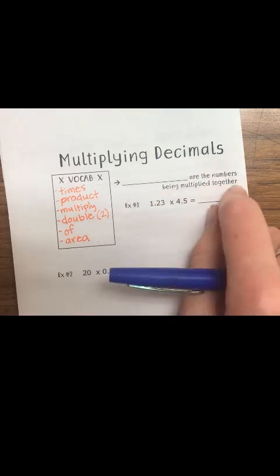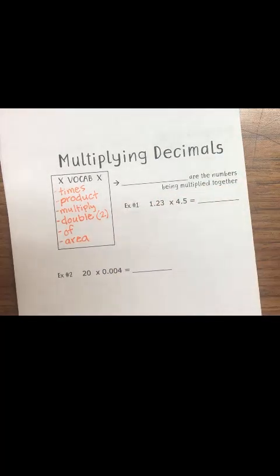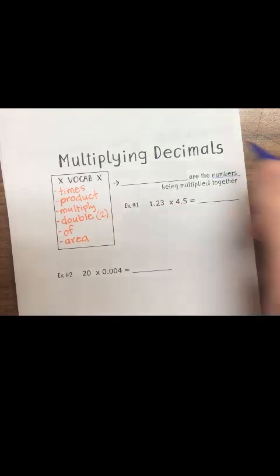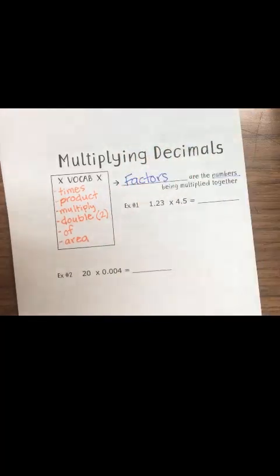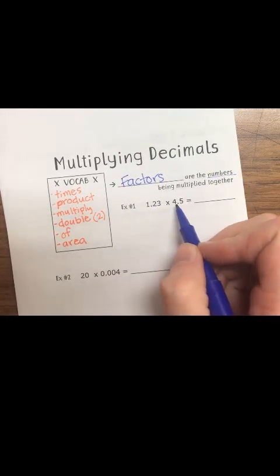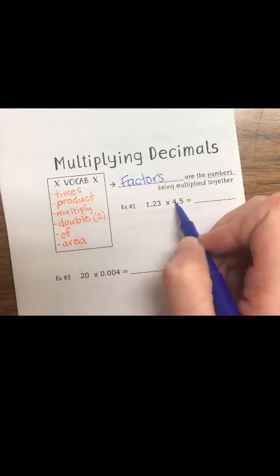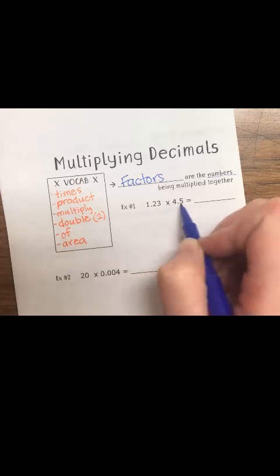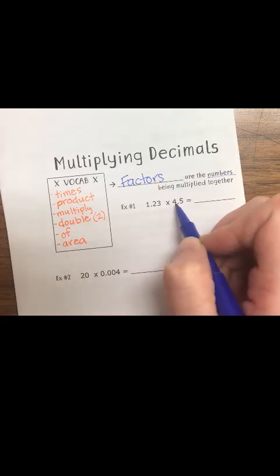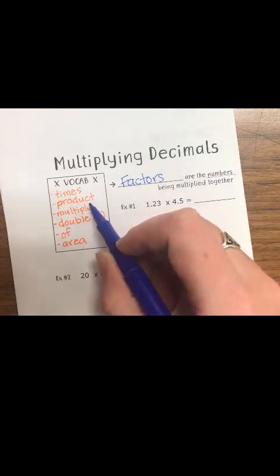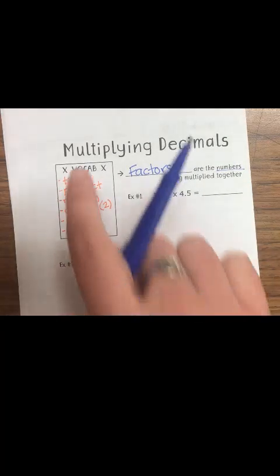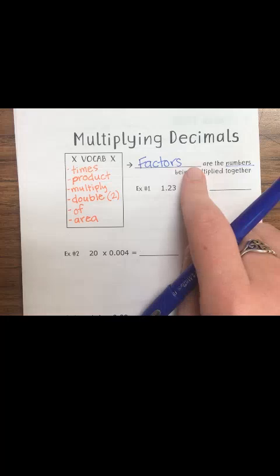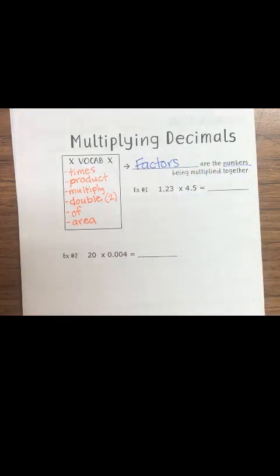The next thing we're going to talk about is: what are the numbers being multiplied together called? Those are called factors. Factors are the numbers being multiplied together. In example one, my factors are 1.23 and 4.5 — those are my two factors, just my two numbers being multiplied together. My product is the answer. Now that we've talked about vocabulary and what factors mean, let's actually go through a problem and work it out.